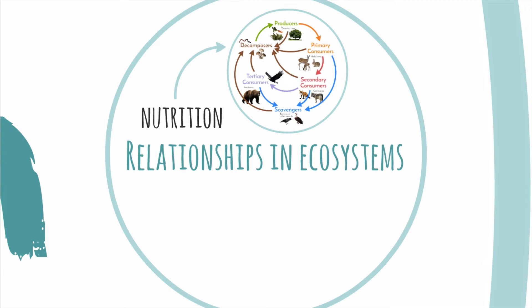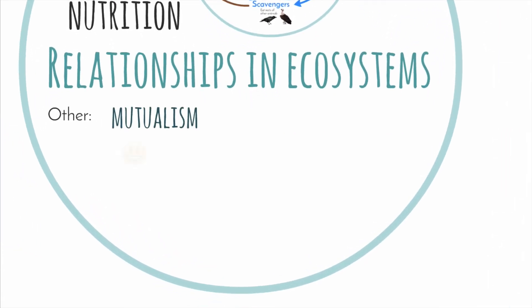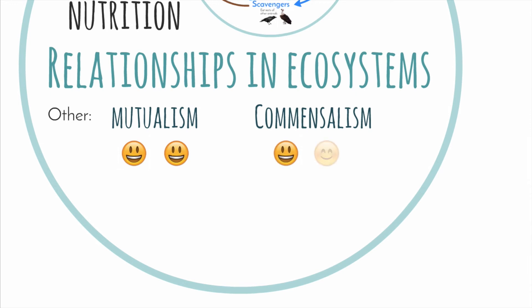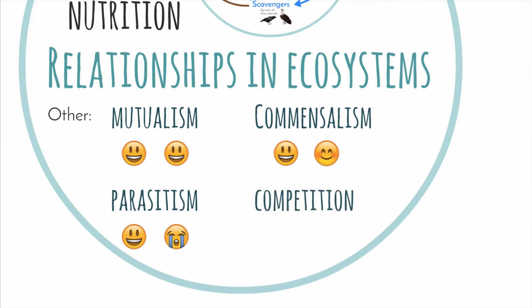Apart from nutrition, there are other relationships among living things in an ecosystem. Mutualism is the relationship between two species when both benefit. Commensalism is the relationship between two species when one benefits and the other remains unaffected. The species that benefits is called a parasite. Two species compete with each other to survive because they have the same needs — we call that relationship competition.